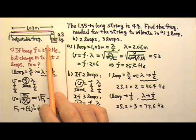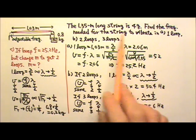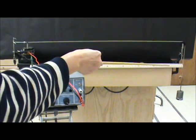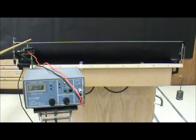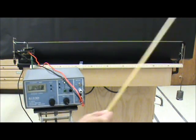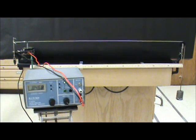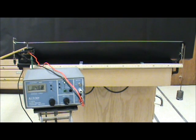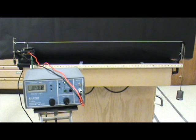I have a setup just like this, so let's look at the demonstration. Here is the string with a meter stick — the vibrating length is 103 centimeters. The weight is 800 grams, 0.8 kilograms, giving 8 newtons of tension. This function generator controls the vibration frequency. I'm going to increase the frequency and we should expect to see one loop around 25.2 hertz.